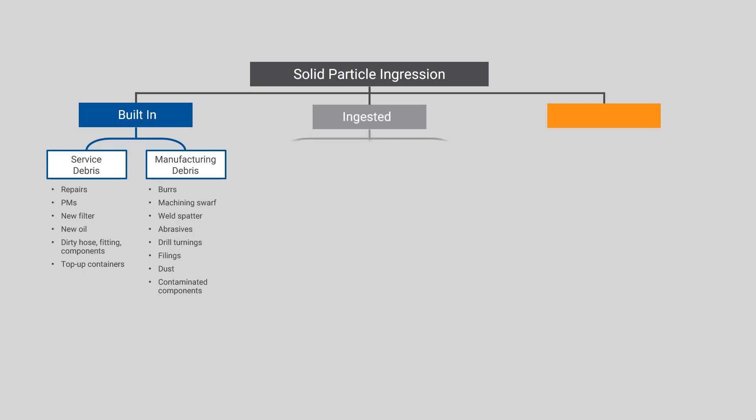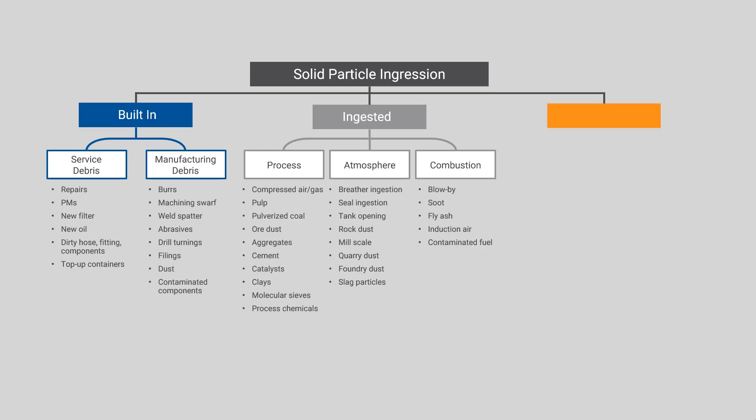Next, we have ingested particles. Ingested particles you can think about through the atmosphere. These are the ones that are coming in either through the process or through combustion. They are being made through the process themselves. And this is where your dirt, water, it could be road salts, mixing of different lubricants, they are ingested in the lubricant itself.